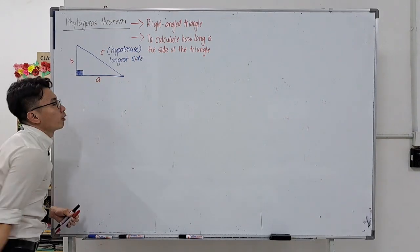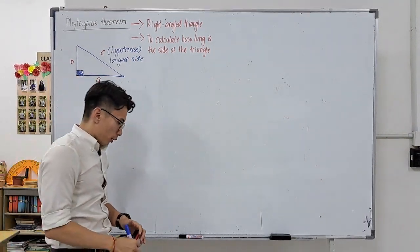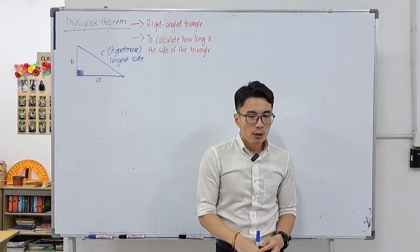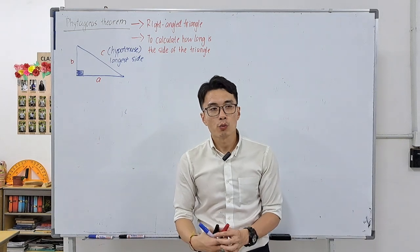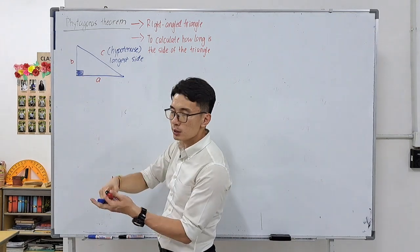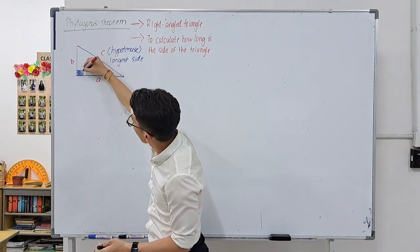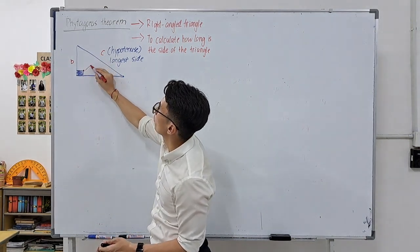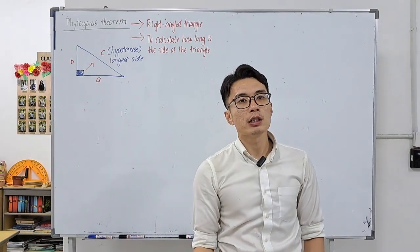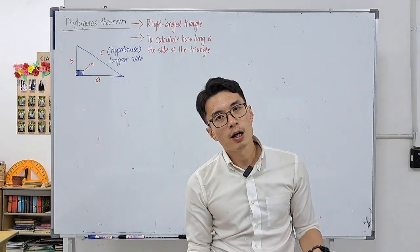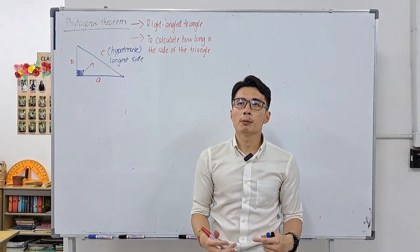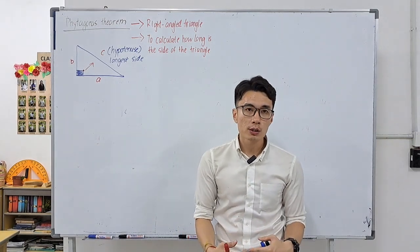The hypotenuse is the longest side of a right angle triangle. For students seeing this for the first time, an easy way to remember where the hypotenuse is: look at the 90 degree angle – see this pointy part? This pointy part is pointing at one side, and that side which the 90 degree angle is pointing to is the hypotenuse.